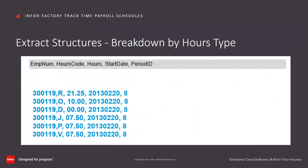This is an example of the breakdown by hours type structure. The extract configuration calls for employee number, hours code, hours, period start date, and pay period ID. These data points display in the same order for all hours types encountered in the pay period. Each hour type encountered generates its own record, with the primary source being employee, followed by clocked hours, followed by alternate hours in alphabetical order. In this case we have clocked hours of 21.25, overtime of 10 hours, and alternate codes J, P, and V of 7.5 hours each.